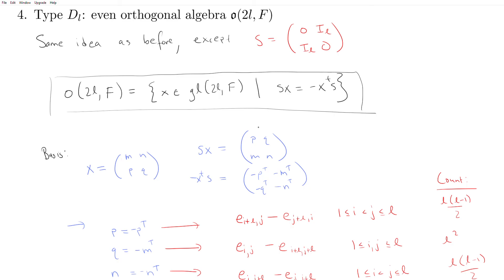Those are our four classical Lie algebras: types A, B, C, and D. As we study more, we'll see that these become really important building blocks for the study of semi-simple Lie algebras, which is why we introduce them now.